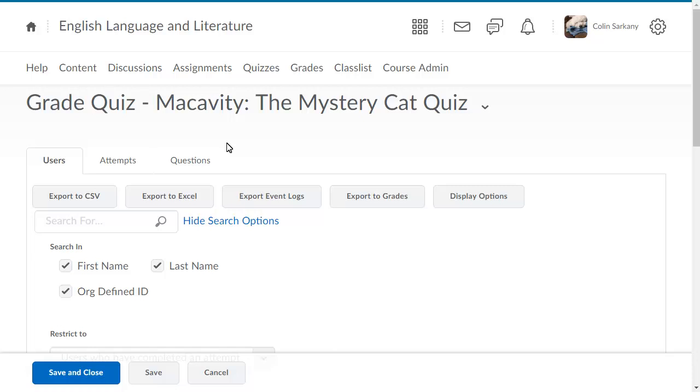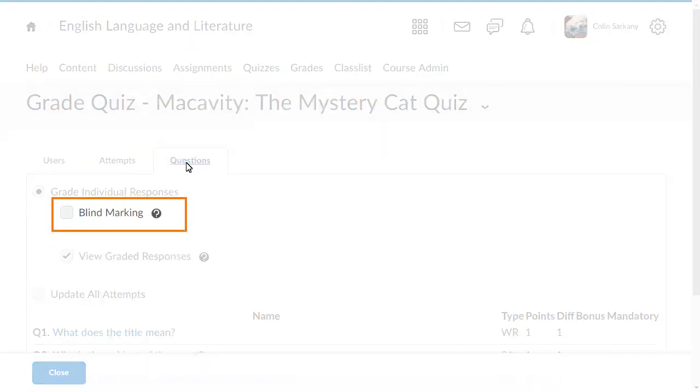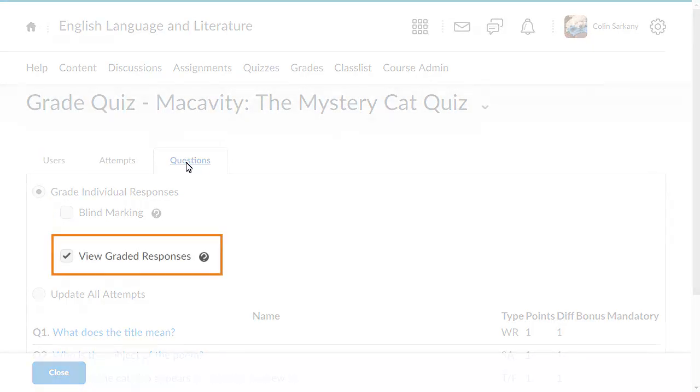Click the Questions tab. When grading individual responses, you can remove user details from each question by selecting Blind Marking. If View Graded Responses is selected, questions that have already been graded by the system or another instructor display.